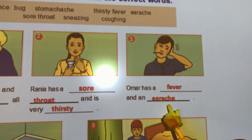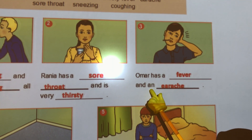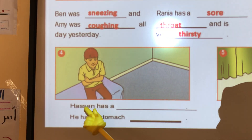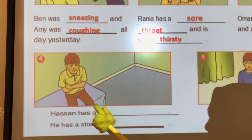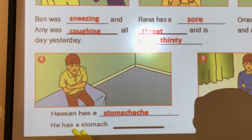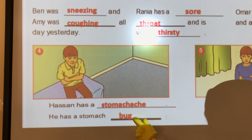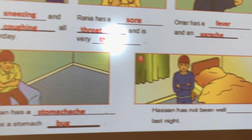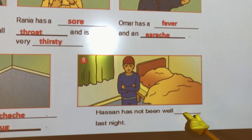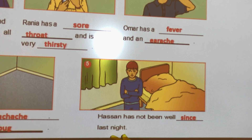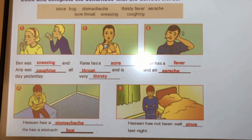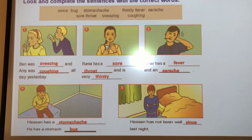Be careful — before 'earache' we use 'an'. Number 4: Look at Hassan. Hassan has a stomachache. Why? He has a stomach bug. The last sentence, number 5: Hassan hasn't been well since last night. Now please, everyone, check your answers and check the spelling too.